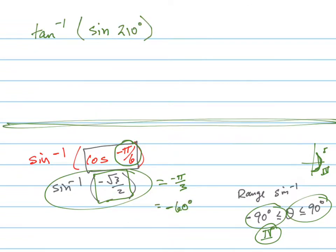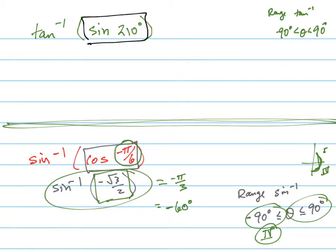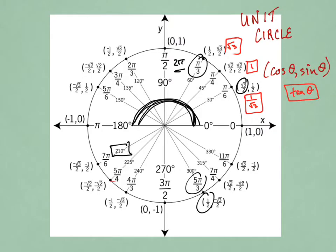Let's try another one. What's the tangent inverse of the sine of 210 degrees? We've got to think about the range of the tangent inverse function. The range of the tan inverse function is between negative 90 and positive 90, not including them — so it's like the sine one, but without the equal-to part, because it's not defined at those places. Now, the sine of 210 degrees is just some ratio. Looking at the unit circle, 210 is right here — the sine of 210 is negative 1/2.